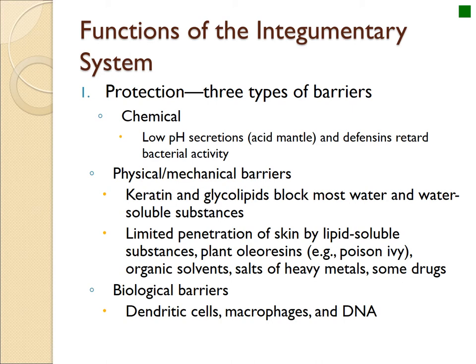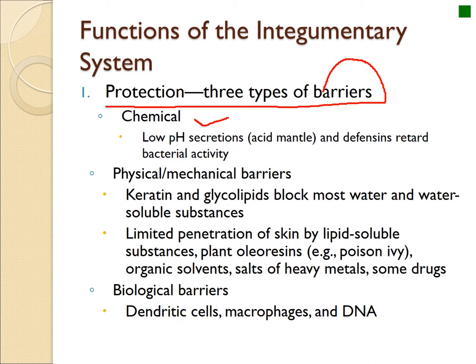We're going to first look at the functions of the Integumentary System before getting into actual anatomy. The Integumentary System is your body's primary barrier, also called an innate immunity barrier — the first thing there before anything can get into the body, including chemicals, environmental changes, or infectious agents. There are three types of barriers. One is a chemical barrier, preventing damage from acids and bases.